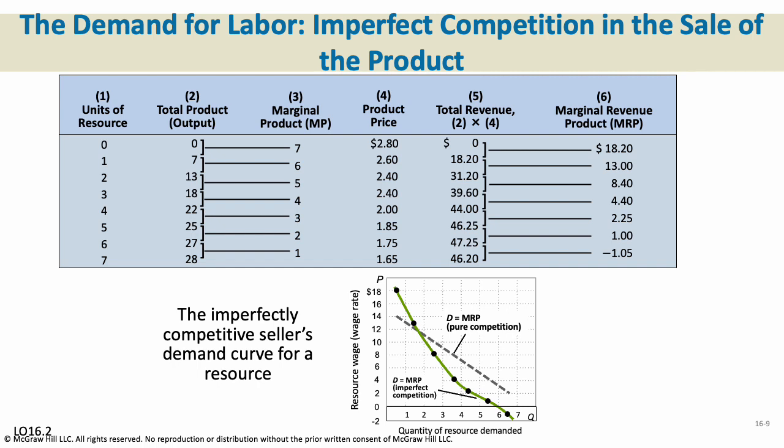In imperfect competition, the resource demand curve — the solid green line — slopes downward, and it's steeper than for a purely competitive seller (the dashed line), because the pure competitor can sell added output at a constant price. In imperfect competition, price is changing — sellers can set the price but generally must make it cheaper to sell more. So your product is getting cheaper and your labor still yields diminishing returns, resulting in much greater changes in the marginal revenue product. That's the key difference.